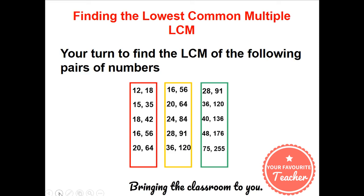You can now find your LCM of the following pairs of numbers. You can choose red if it's not all that clear at the moment. You can use amber if you have a little bit of confidence in what you need to do, and you can use green if you know exactly what you need to do. This should take you between 7 to 10 minutes. Pause this video for that length of time before going to the answers.